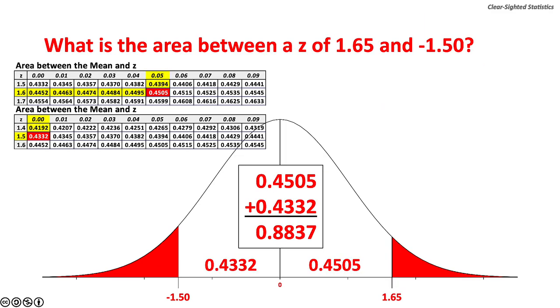What is the area between z values of 1.65 and negative 1.50? We can solve this problem using this special rule of addition. 0.4505 plus 0.4332 equals 0.8837 or 88.37%.